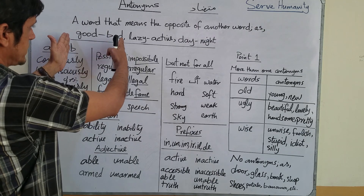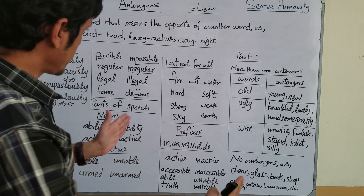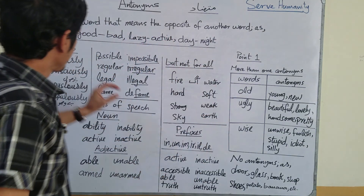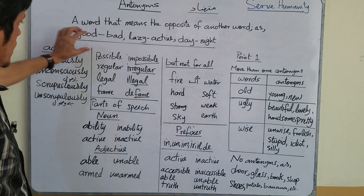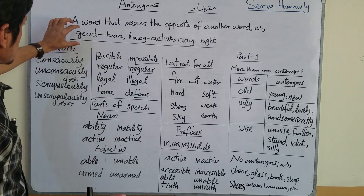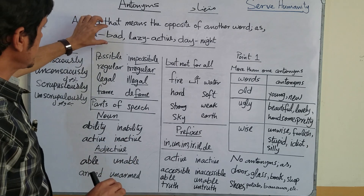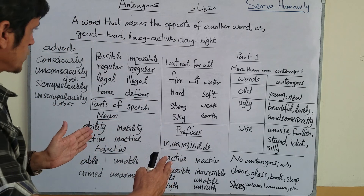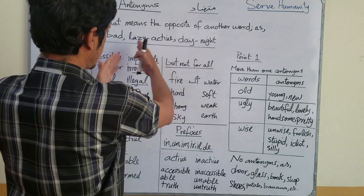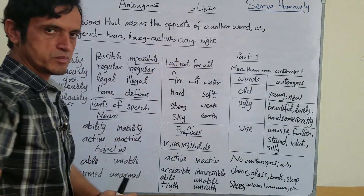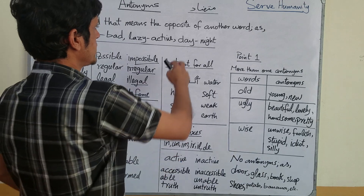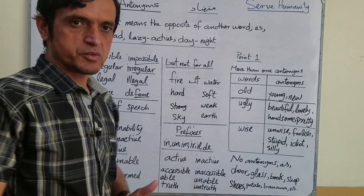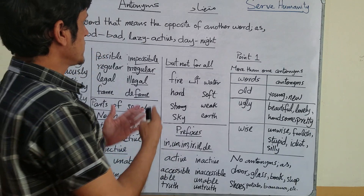For example, good and bad — these two are antonyms of each other, متضاد ہیں۔ Similarly, lazy and active; day and night. Now you see: good means good, bad means bad. جس میں اچھائی ہو اس میں برائی نہیں، اور جس میں برائی ہو اس میں اچھائی نہیں۔ So good and bad are antonyms of each other. Lazy means سست، active means چست یا بامعنی۔ Day and night — this is the second example.